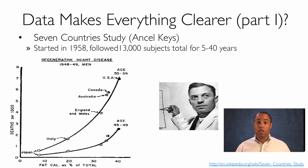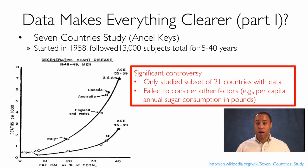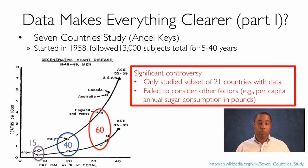However, this study has caused a lot of controversy. In particular, Keys only studied a subset of the 21 countries that had data, and failed to consider other factors that might cause deaths from degenerative heart disease. For example, looking at per capita annual sugar consumption: Japan had 15 pounds per person per year, Italy had 40 pounds, and England and Wales had 60 pounds. This suggests there's also a correlation between per capita annual sugar consumption and deaths per 1,000 from degenerative heart disease, which really emphasizes Fisher's point that correlation does not imply causation.